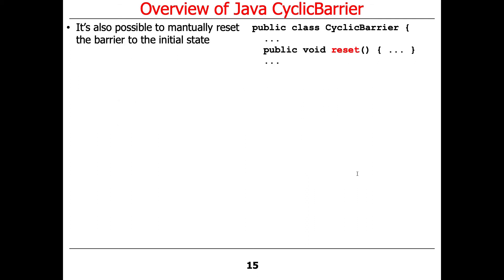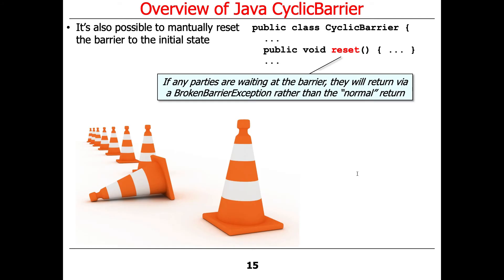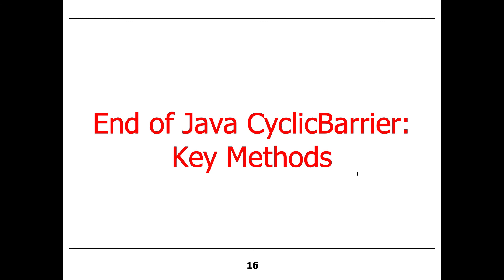It's also possible to manually reset the barrier to its initial state by calling the reset method. If reset is called, any of the parties waiting at the barrier receive a BrokenBarrierException rather than the normal return from await. This can be used to indicate whether something succeeded normally when everybody awaited, or if you were manually reset, you'll get the BrokenBarrierException — so the calling code can figure this out. And that's the end of the key methods for Java CyclicBarrier.